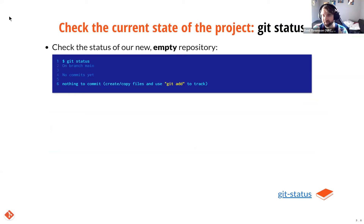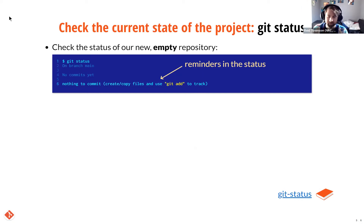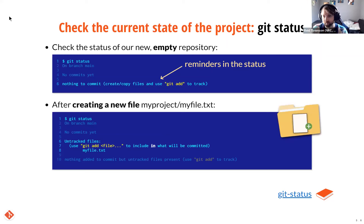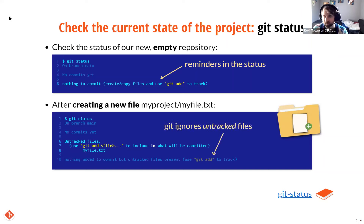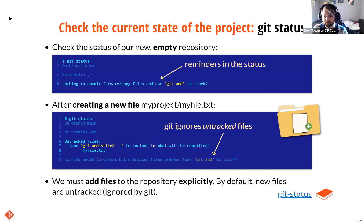Now we'll get started with setting up a repository. First, create a directory for a new project — or if you want to start using Git in an existing folder, just skip this step. Then type the git init command. All this does is create a .git directory — a hidden directory where everything to do with Git, like all your commits, is stored. The most common command you'll use is git status. This lets you find out the current state of the repository, like whether any files have changed. Right now we just have an empty folder so it has nothing to report.